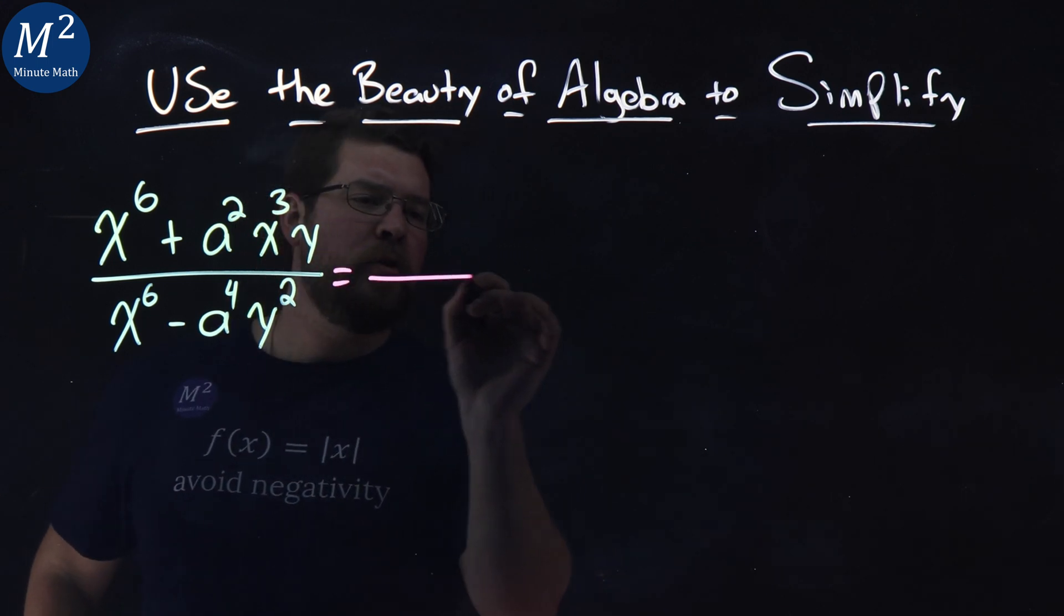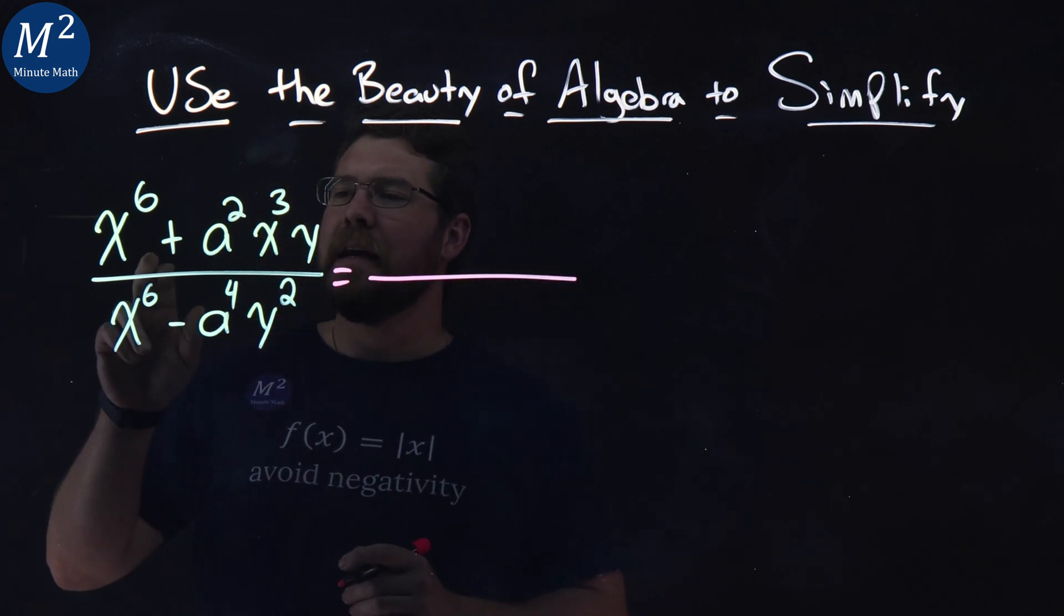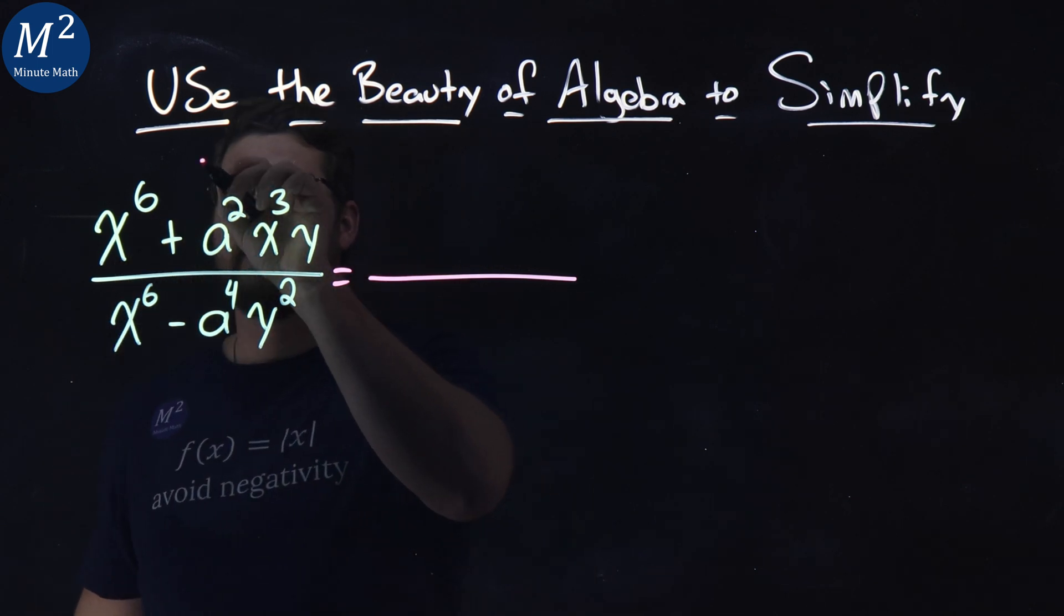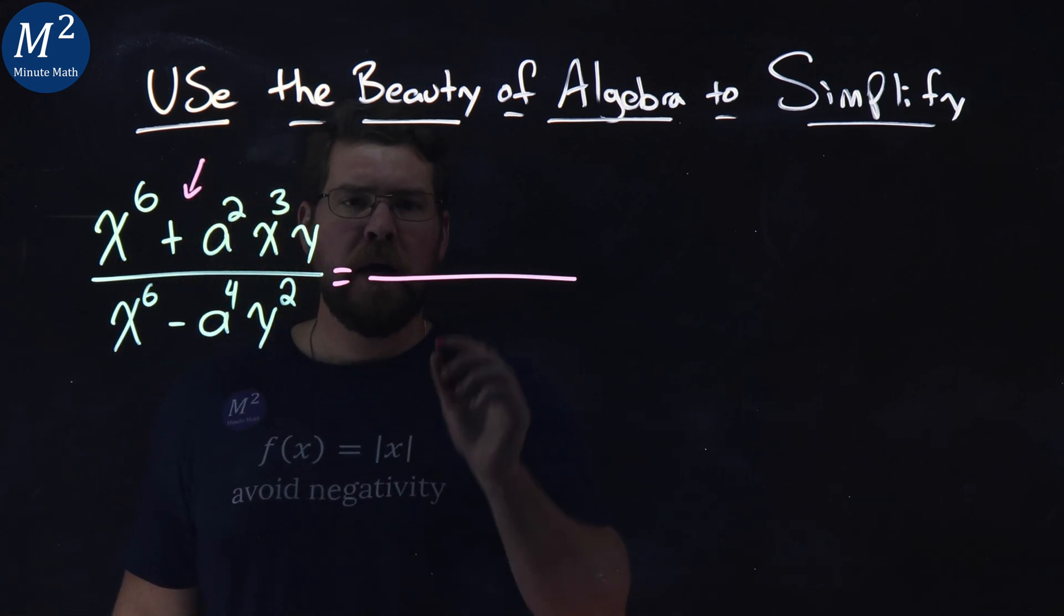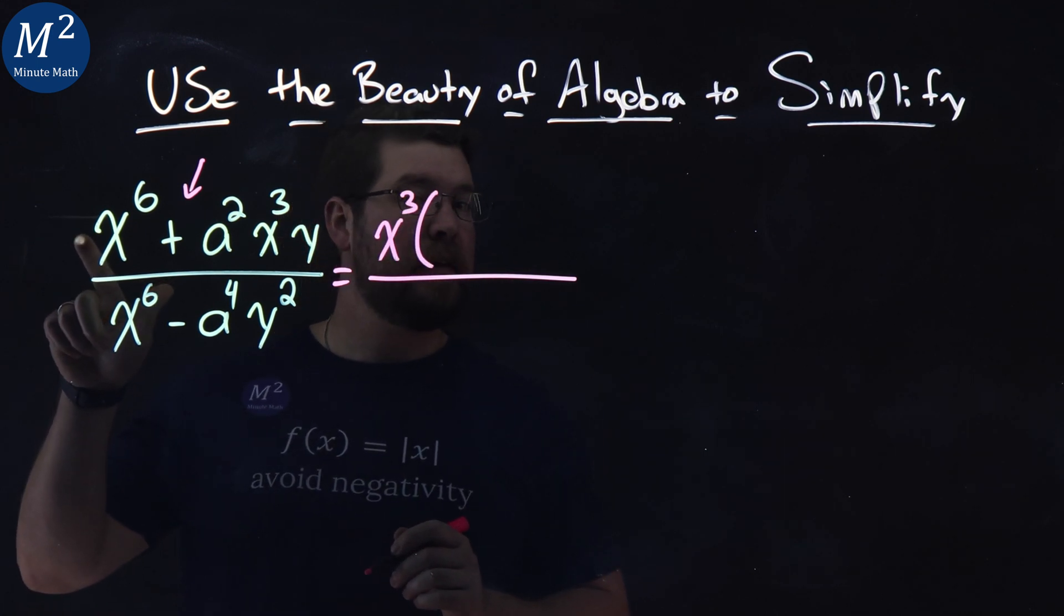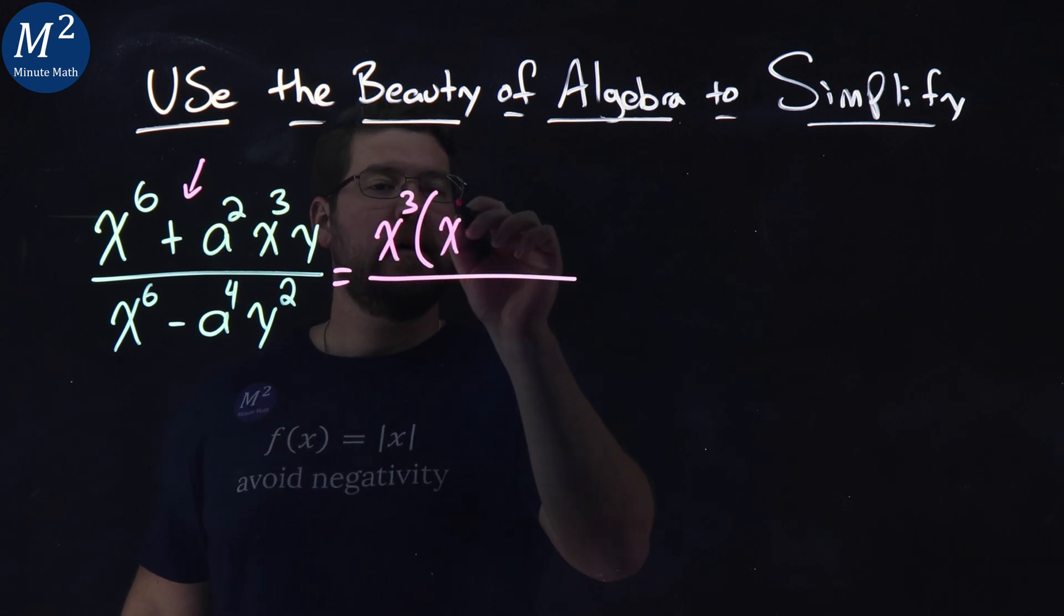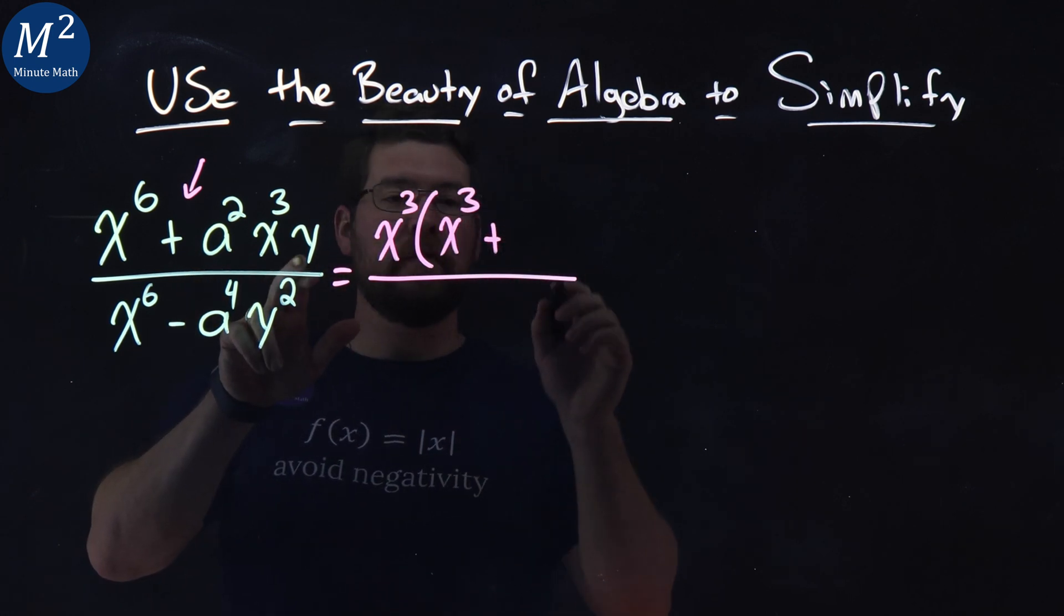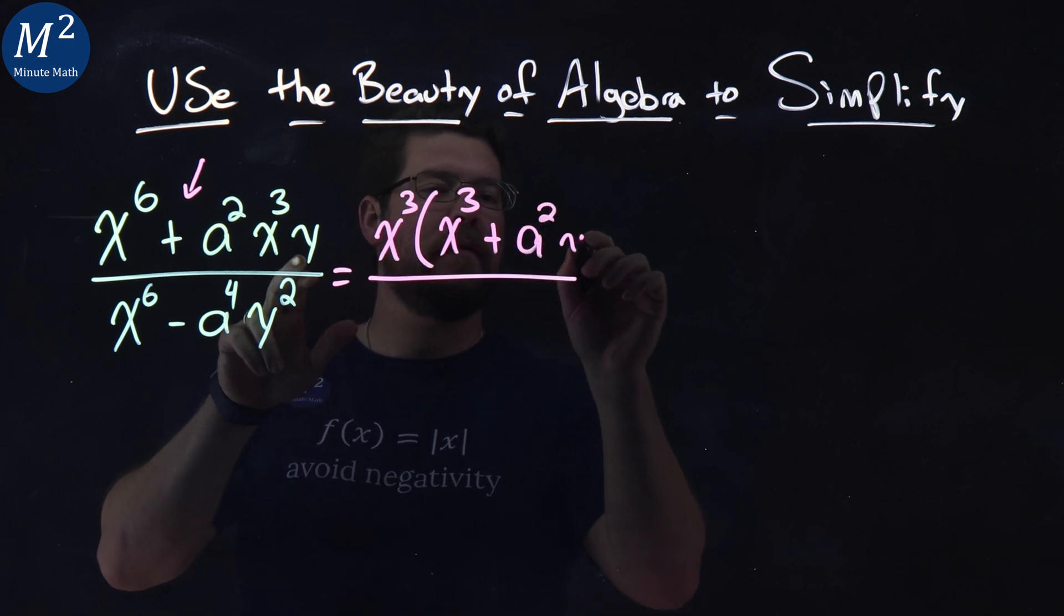All right, let's talk about the numerator first. I see an x to the third in both parts. We're separated by this little plus sign. So if I pull out an x to the third from both parts, the first part x to the sixth minus x to the third is an x to the third plus the inside what's left over is a squared y.